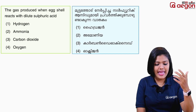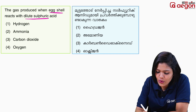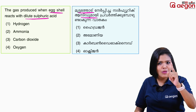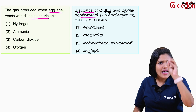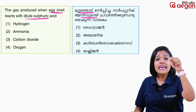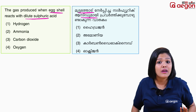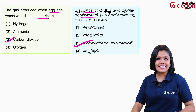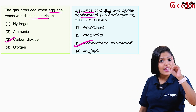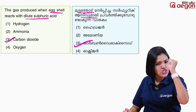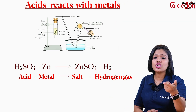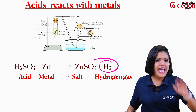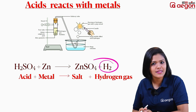Next question: what gas is produced when egg shell reacts with dilute sulfuric acid? Egg shell contains calcium carbonate. When a carbonate reacts with acid, carbon dioxide gas is produced. So the correct answer is carbon dioxide gas. When metal reacts with acid, hydrogen gas is produced — that is a separate and clear point.